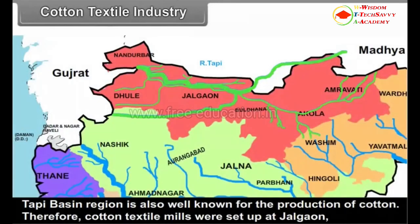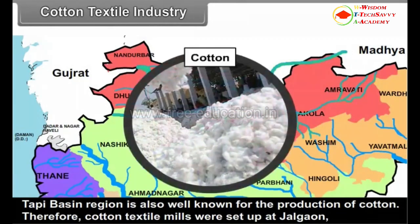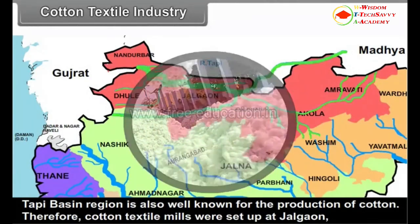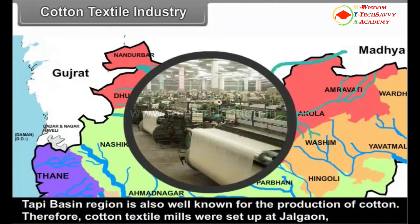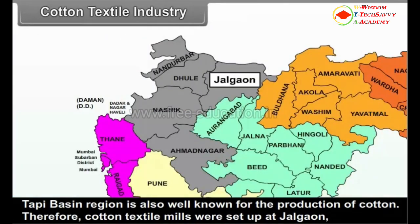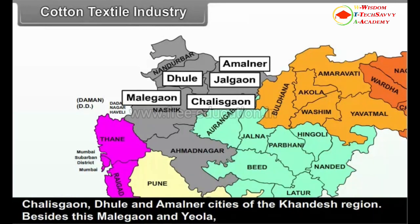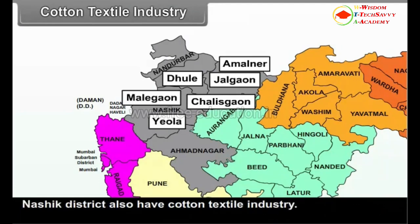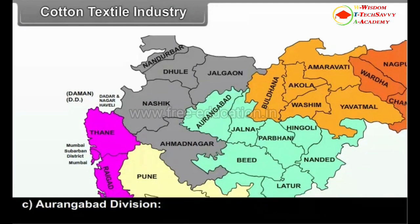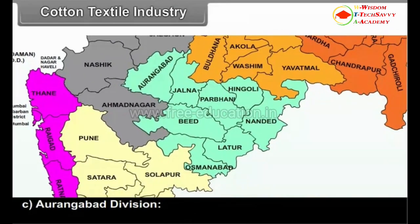B. Nasik Division: The Tapti Basin region is also well known for the production of cotton. Therefore, cotton textile mills were set up at Jalgao, Chalisgao, Dhule and Amalner cities of the Khandesh region. Besides this, Malegao and Yavlar in Nasik district also have cotton textile industry.